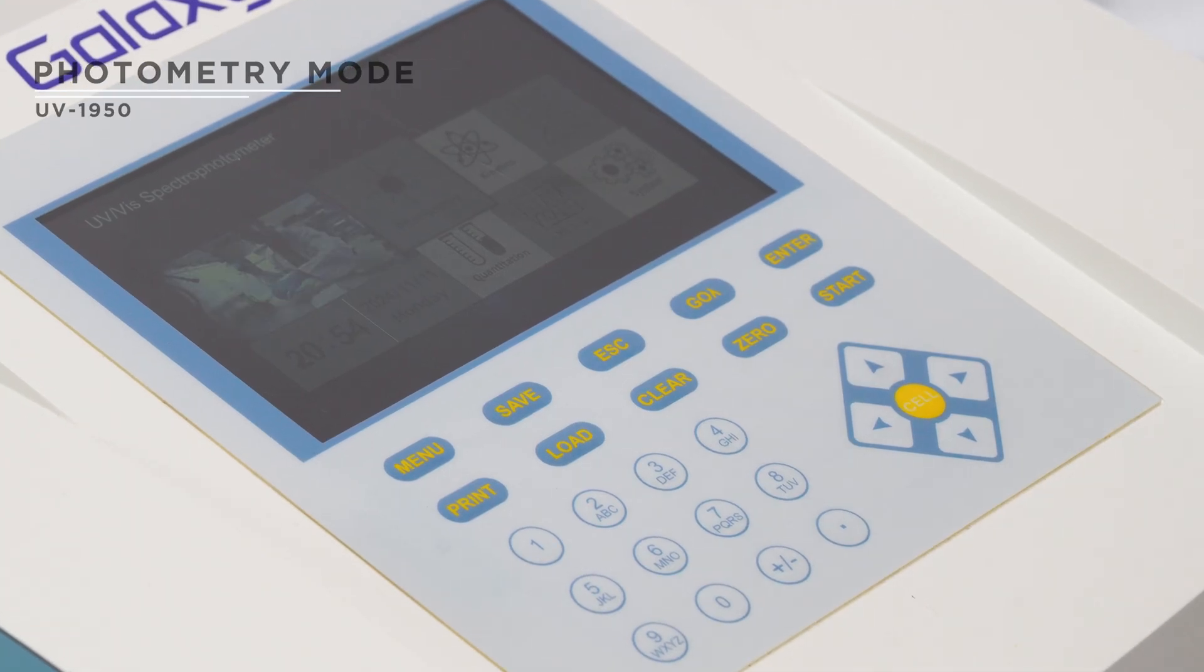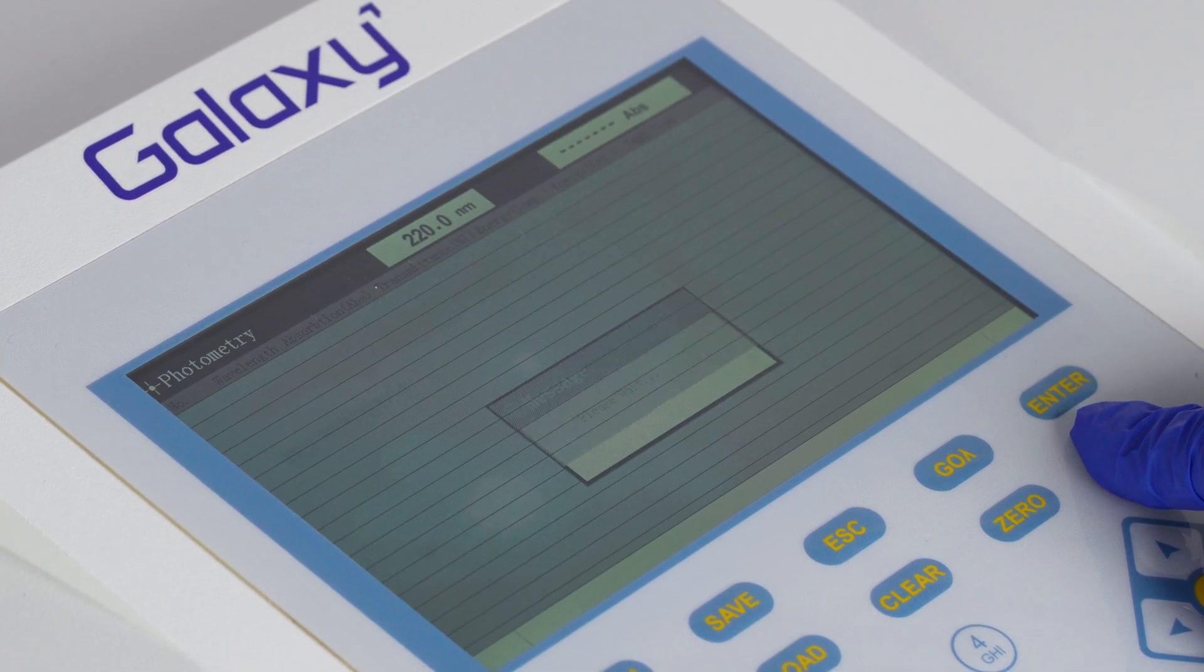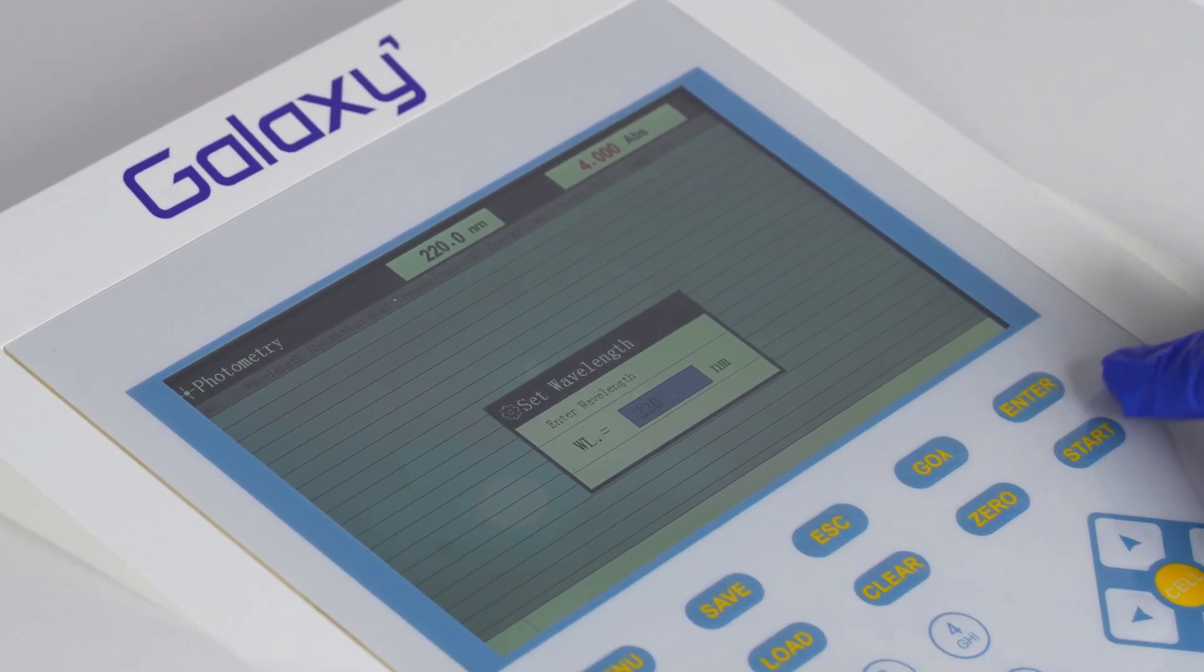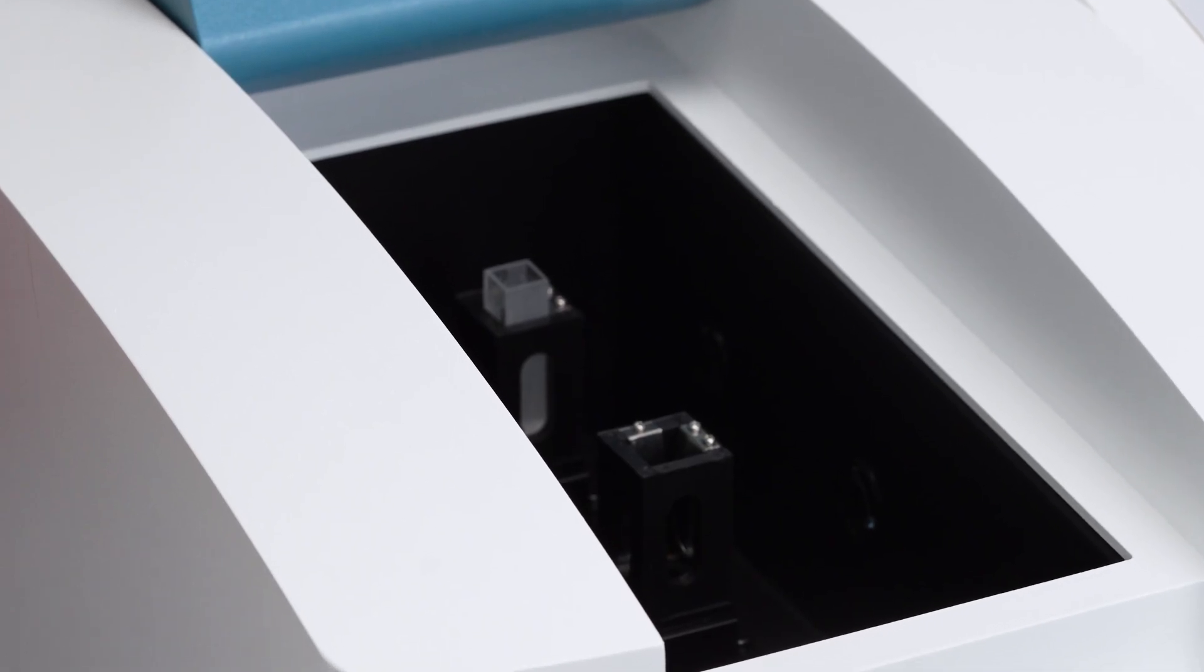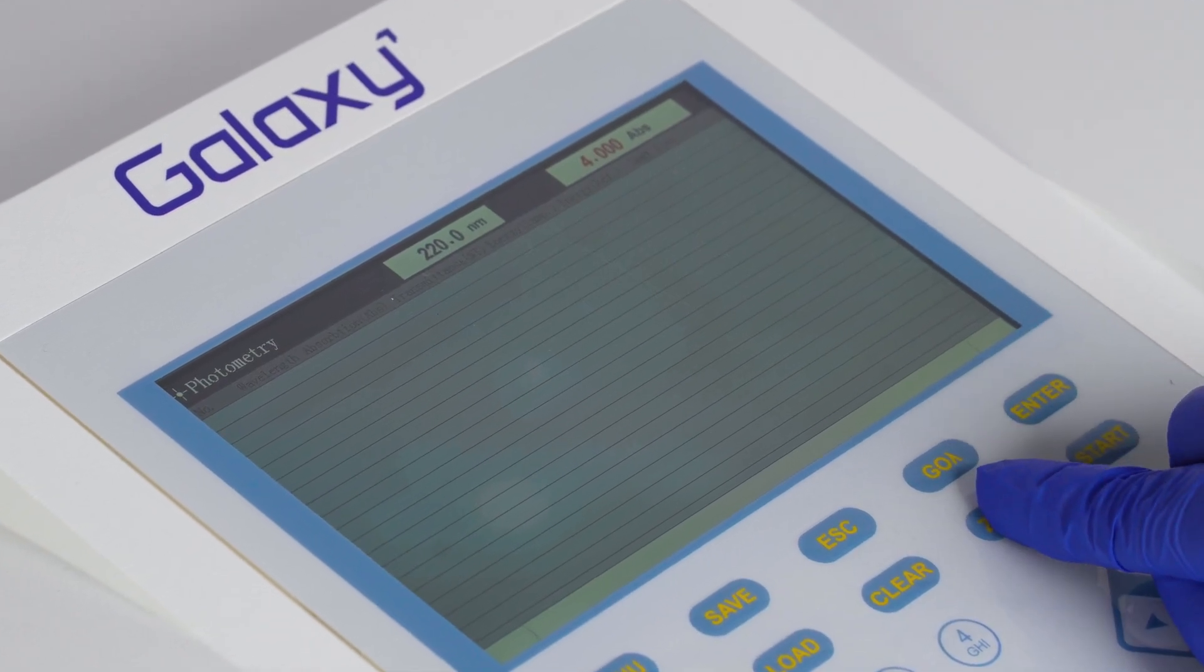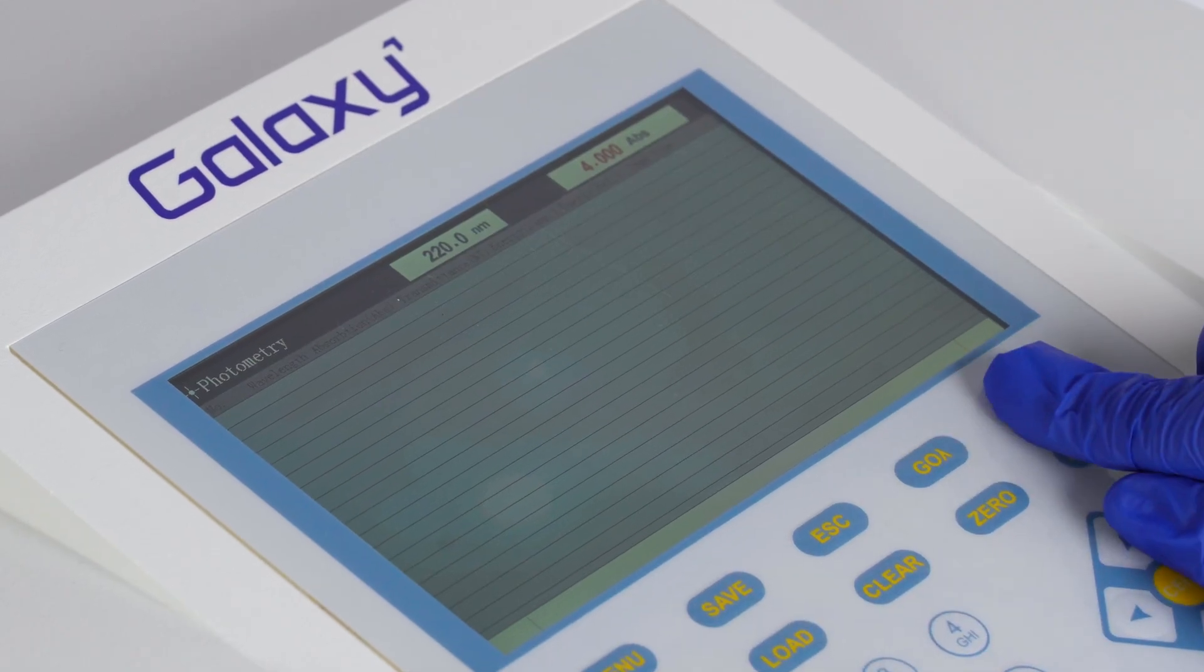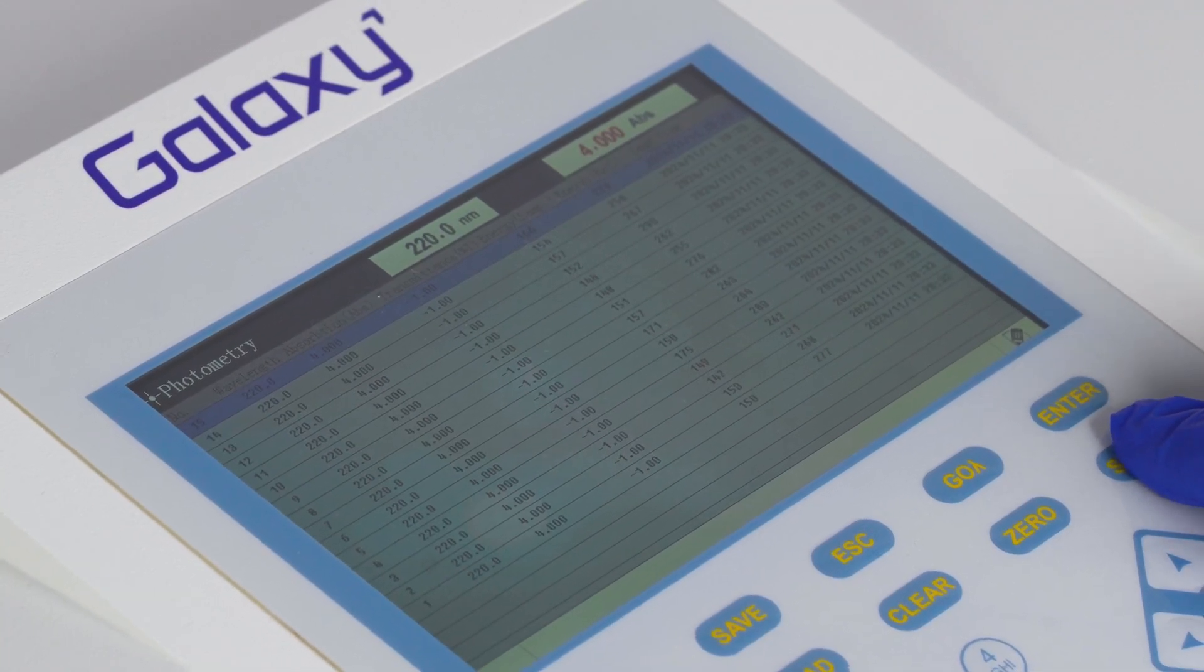In photometry, to measure absorbance, press enter to select photometry. Press go lambda to input the desired wavelength and press enter. Place a blank cuvette in front of the light source and press zero for blanking. Insert the sample into the sample holder and press start to read the absorbance. The reading will appear on the display.